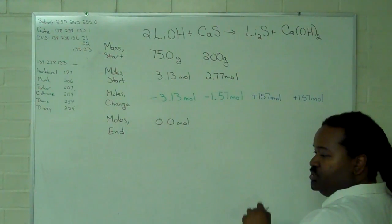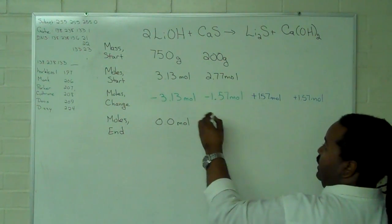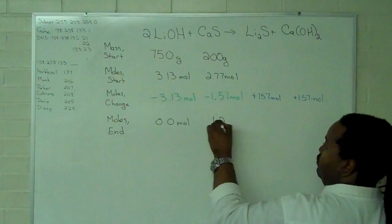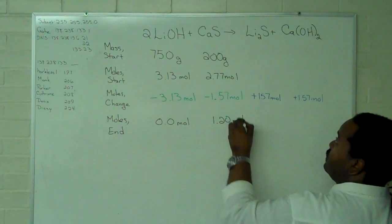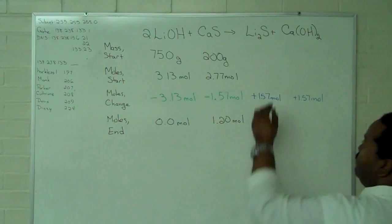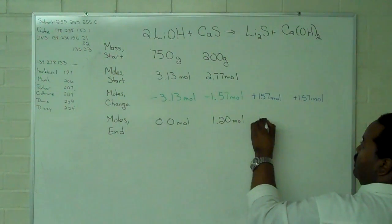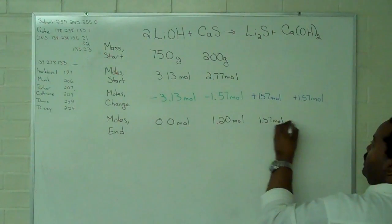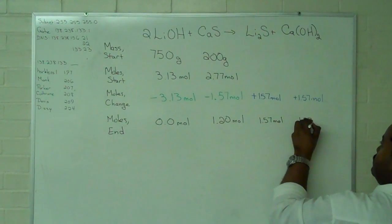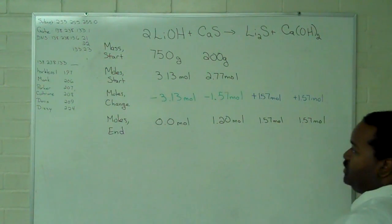I do the subtraction here, and I end up with 1.20 moles of the calcium sulfide. And because we had no products to start with, I simply bring down the amount of the change for these remaining two.